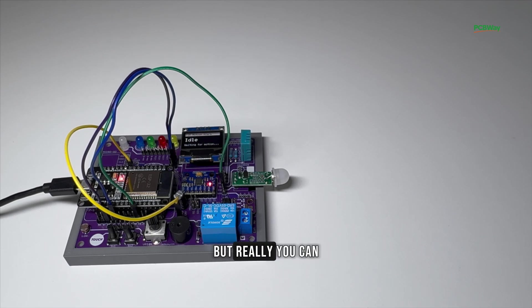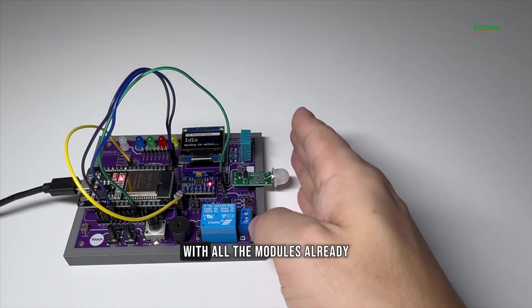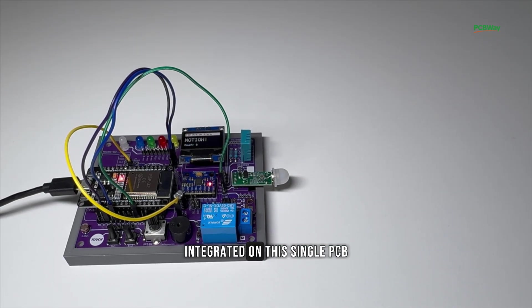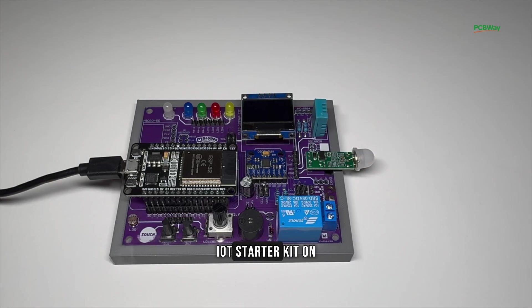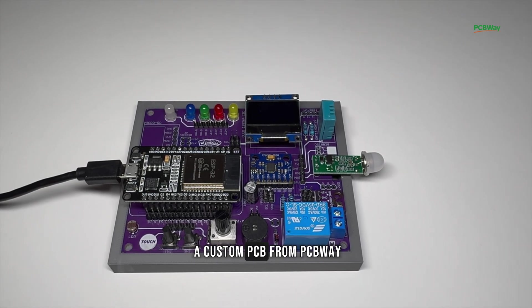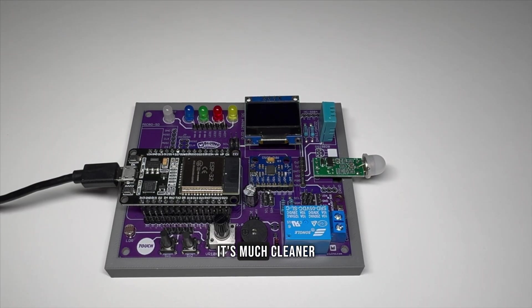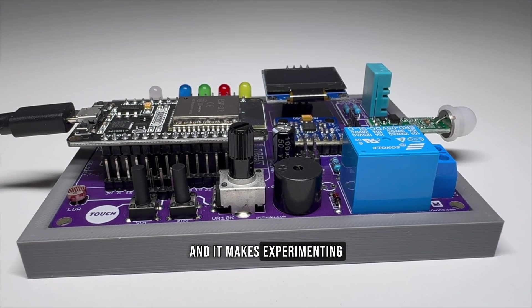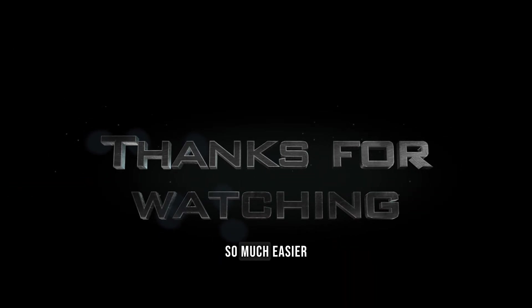Those are just three examples, but really, you can build dozens of projects with all the modules already integrated on this single PCB. And that's your ESP32 IoT Starter Kit on a custom PCB from PCBWay. It's much cleaner than using a breadboard with lots of wires, and it makes experimenting and prototyping so much easier.